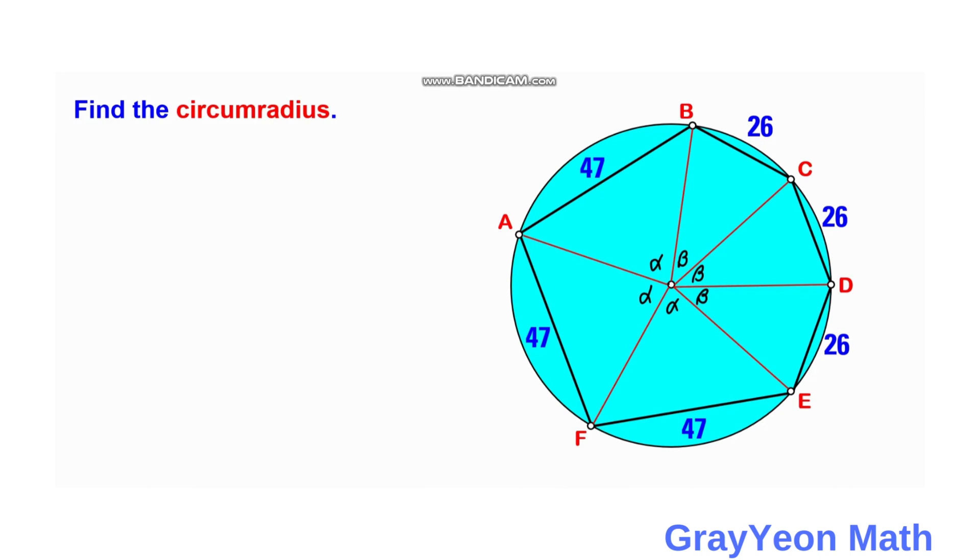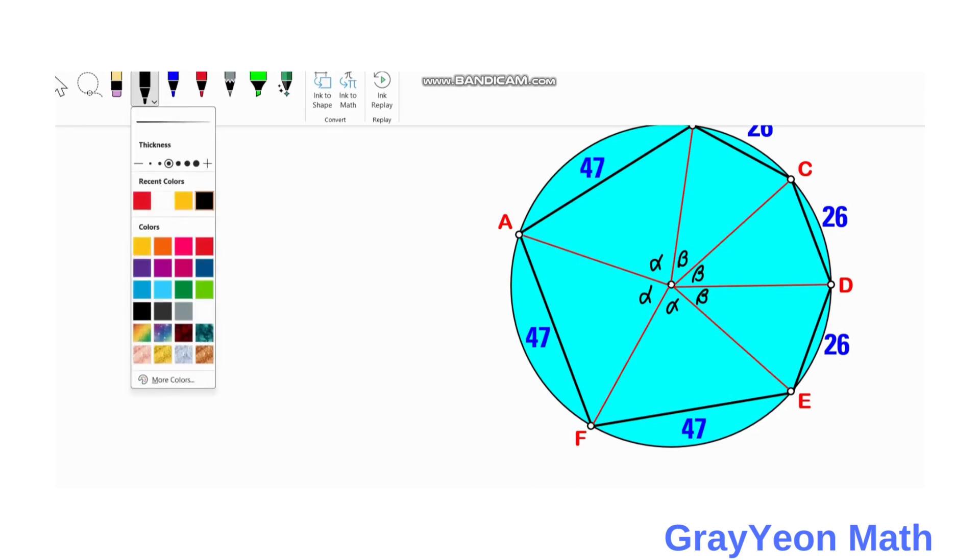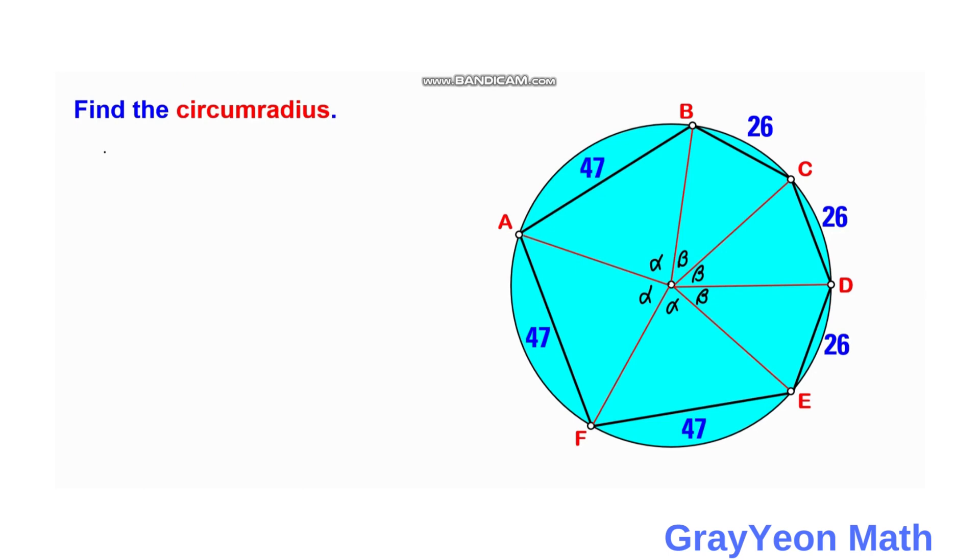We have to recall that the total angle in a circle is 360 degrees. So we just need to add 3 alpha plus 3 beta equals 360 degrees. We can factor out the 3, so alpha plus beta equals 360 divided by 3. Alpha plus beta equals 120 degrees.